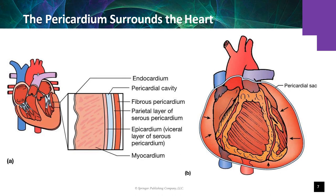The heart muscle has three layers: the epicardium, which is the visceral layer of the serous pericardium; the myocardium, the middle and most prominent layer composed of cardiac muscle; and the endocardium, which lines the cardiac chambers and is continuous with the vascular endothelium.